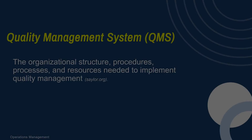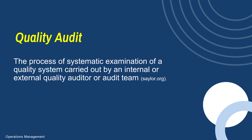So how do companies develop what we call a quality management system? That's just an organizational structure of procedures, processes, and resources needed to implement a quality management program. Another key thing to know is what we call a quality audit — the process of a systematic examination of a quality system carried out by an internal or external auditor or audit team, to determine how efficient your program is.